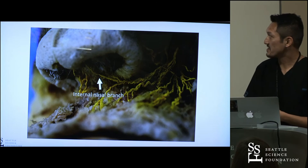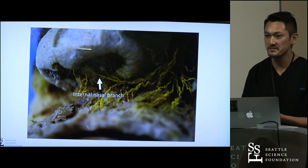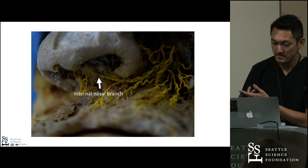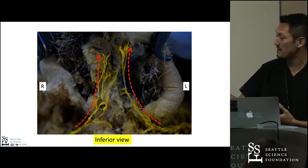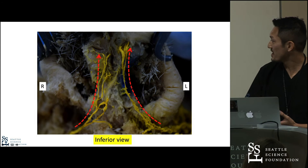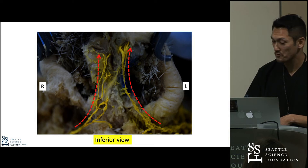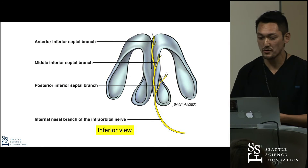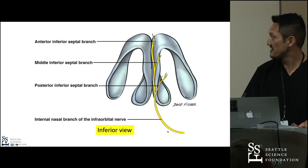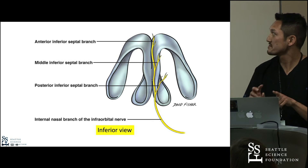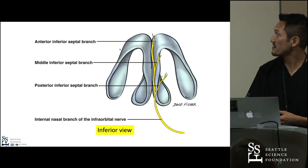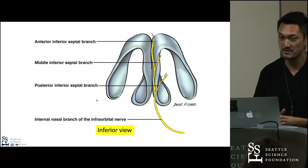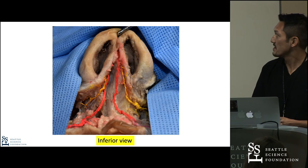Now let's go to another study focusing on the more peripheral part of the internal nasal branch. The internal nasal branch runs in the base of the nasal septum. Deep to the septum, this is the inferior view of the internal nasal branch. Here is the main trunk of the internal nasal branch going anteriorly, which supplies three different branches. The schematic drawing shows the main trunk of the internal nasal branch going anteriorly and giving rise to three different branches: the anterior inferior septum branch, the middle, and the posterior. All specimens — more than 12 to 14 — had these branches.